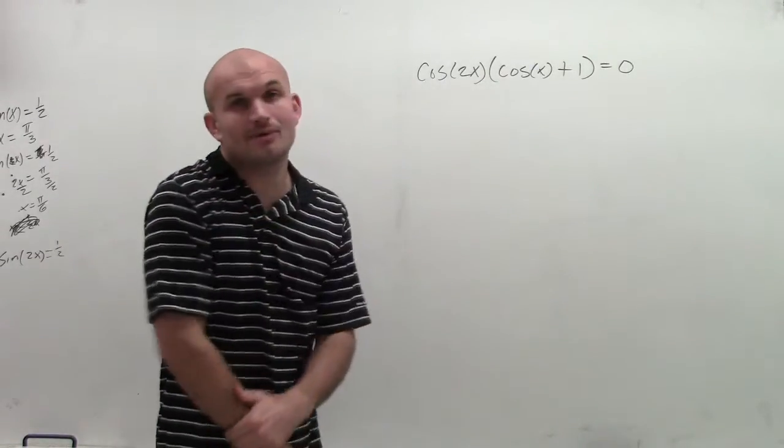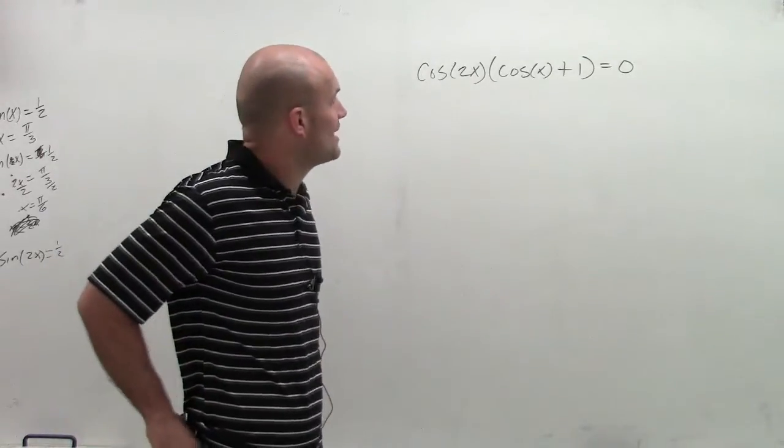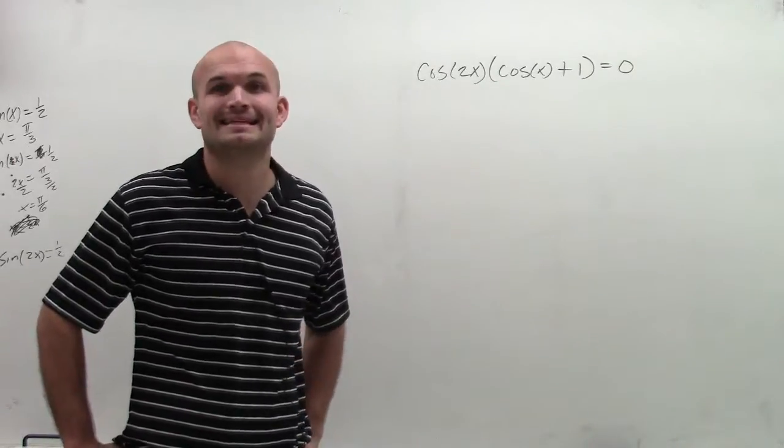So what they want us to do is they want us to solve. And now we do have two cosines, which is cool, but we don't have them the same, and nor are they like terms. So we're going to have an issue of combining these together.